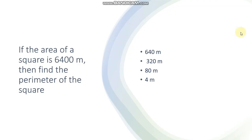Next question is if the area of the square is 6400 meter, then find the perimeter of the square. Very easy question. First option is 640 meter, second is 320 meter, third is 80 meter, and fourth is 4 meter. Answer is 320 meter.